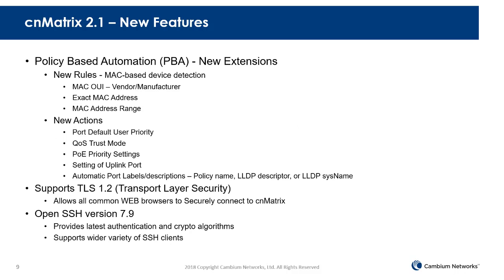Policy-based automation is a very important feature in CN Matrix, and we've added some very useful extensions. Now you can use rules based on MAC address — previously we used LLDP to identify devices. You can use the MAC OUI to identify the vendor or manufacturer, enter an exact MAC address, or enter a MAC address range. The available actions have also been updated: you can set the port default user priority, modify the CoS trust mode, modify the PoE priority settings (low, high, or critical), set which uplink port the switch is using, and automatically label the ports with the policy name, LLDP descriptor, or LLDP sysname.